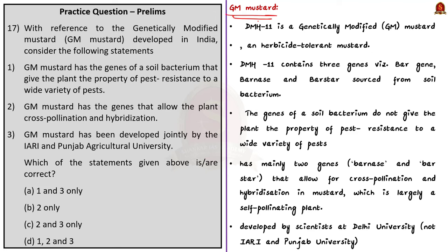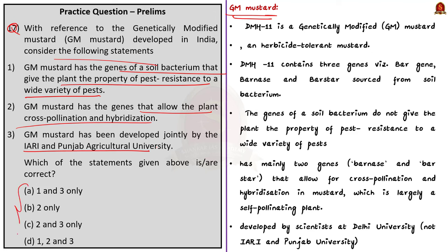Our next topic is GM mustard. With reference to genetically modified mustard developed in India, consider the following statements: GM mustard has genes of soil bacterium that give the plant the property of pest resistance to a wide variety of pests; GM mustard has genes that allow plant cross-pollination and hybridization; GM mustard has been developed jointly by IARI and Punjab Agricultural University. Before answering, let's analyze each statement.